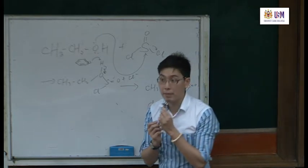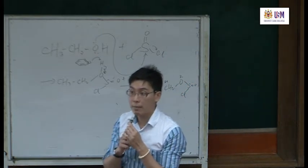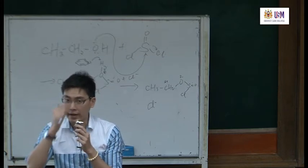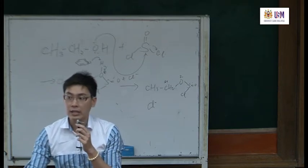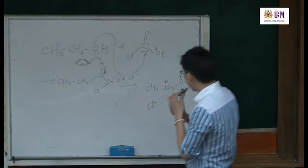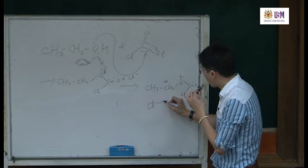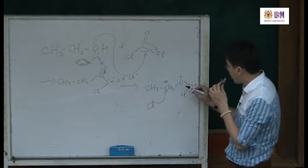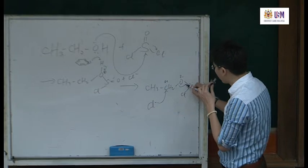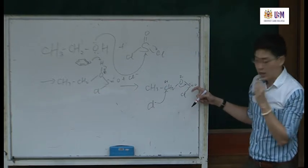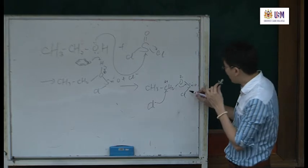Now you have a chloride. What does the chloride do as a nucleophile? What is the difference between a nucleophile and a base? A base attacks a proton — like pyridine attacked the proton. A nucleophile attacks a slightly positive carbon. So the next step will be attack of the nucleophile on the C here.